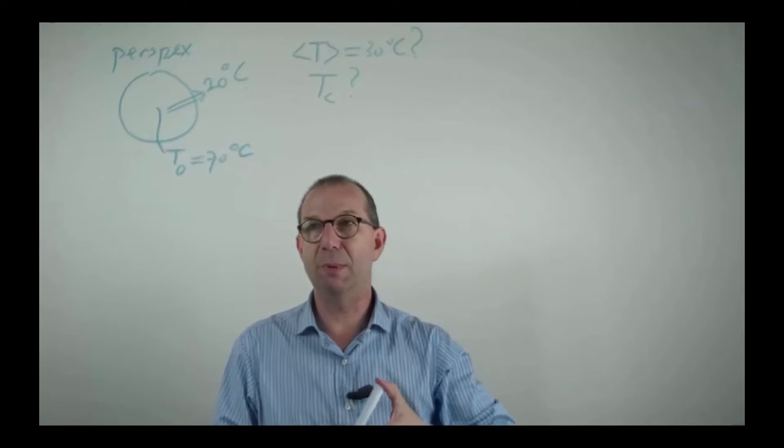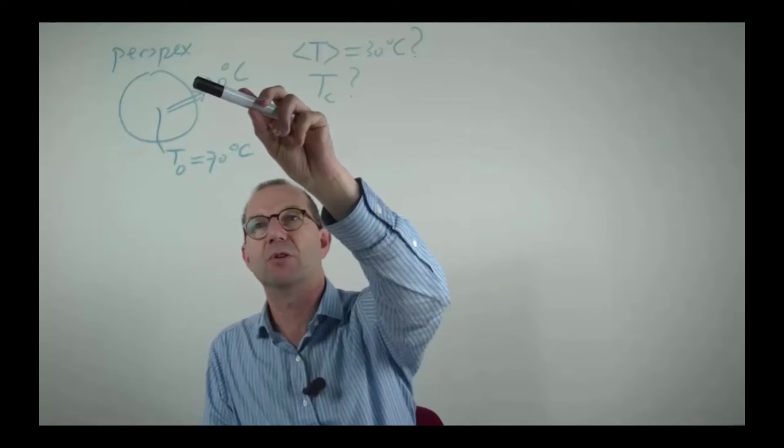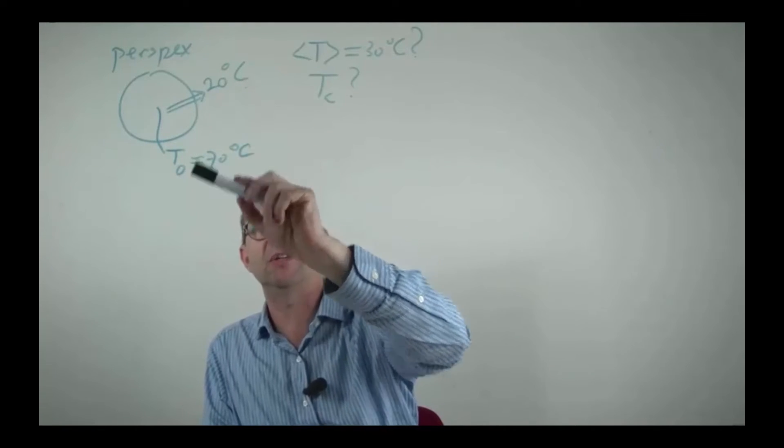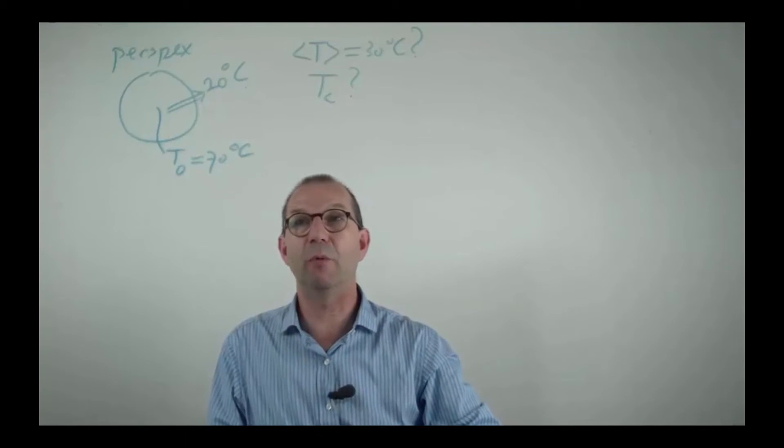We're going to do this by assuming that all resistance to heat is inside the sphere so that the boundary of the sphere is at 20 degrees. In practice that will not be the case but for first estimates we will assume this.